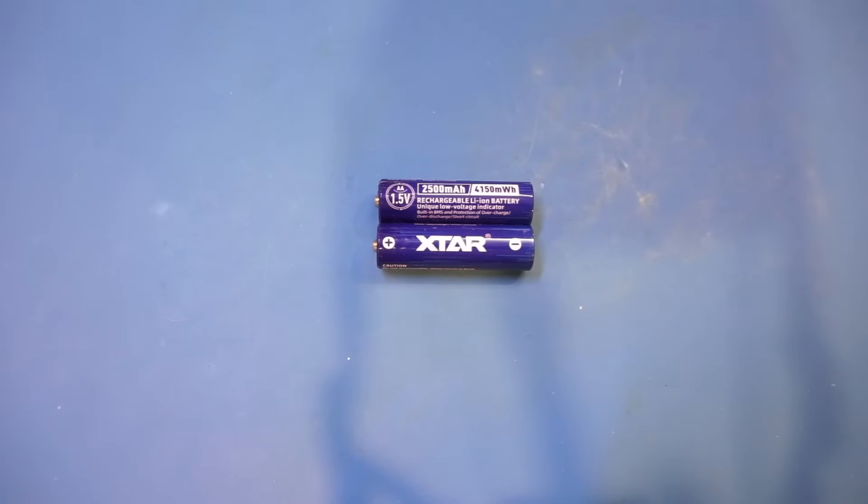Because the XTAR batteries essentially output 1.5V until the very end, the runtime gauge would no longer work, and you would run into a situation where one minute the battery appears to be full, and the next minute it is totally drained.